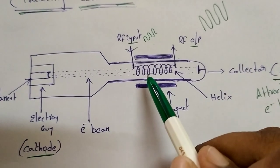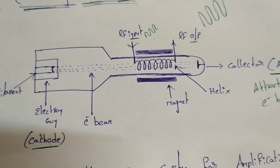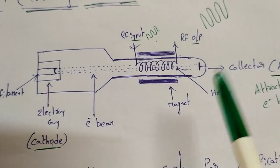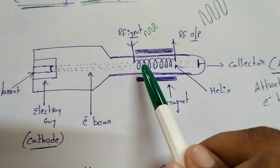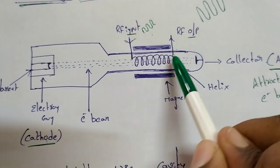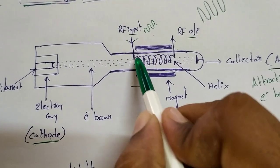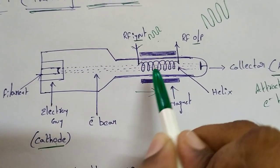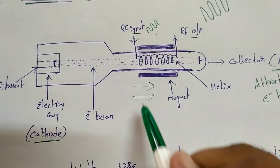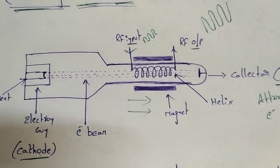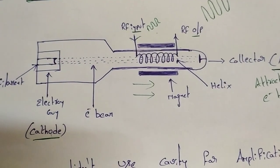When you pass the electron beam to the helix, if you have the RF input here, you can see that the RF input is traveling in one direction, and the electron beam is also traveling in that same direction.